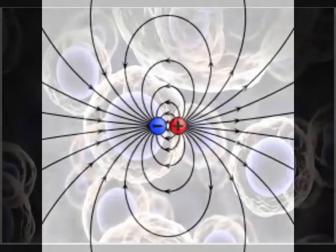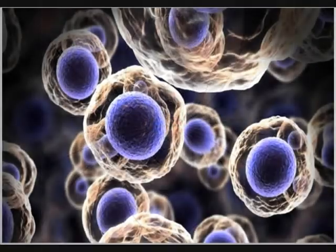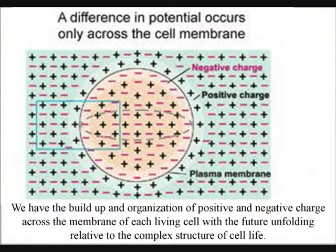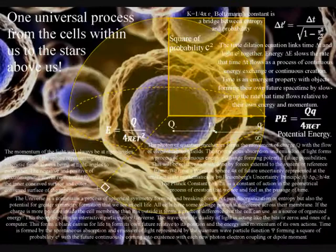We have a republic of cells, with each cell having the build-up and exchange of positive and negative charge, across the membrane of the cell, relative to the position and structure of the cell.